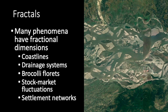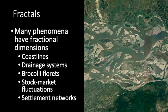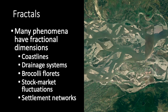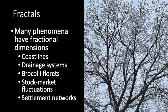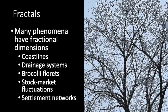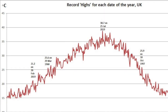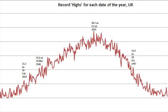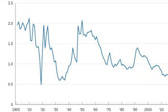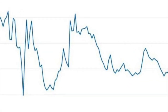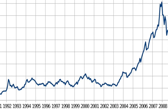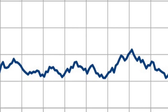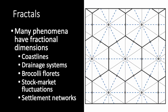Coastlines aren't the only natural phenomena that have fractal properties. There's the winding and braiding of river channels, the branching of broccoli florets and tree branches. Fluctuations in the weather have fractal properties, as do fluctuations in the population of humans and animals, and even fluctuations in stock market indices.